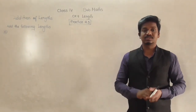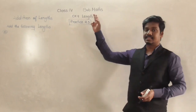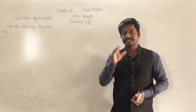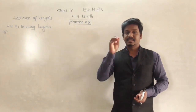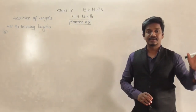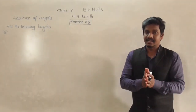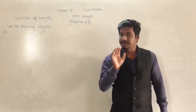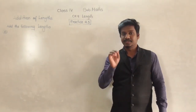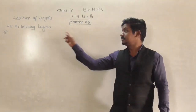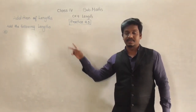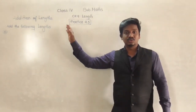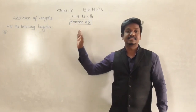So how to add those lengths — that we are going to learn in practice 9.3. Addition of length is the same as the addition of our regular numbers. Just the thing is that both the lengths which we are going to add should be in the same unit. If one length is in meter and another length is in kilometer, those two lengths we cannot add. If you want to add those two lengths, we need them in the same unit.